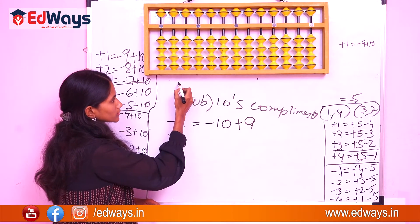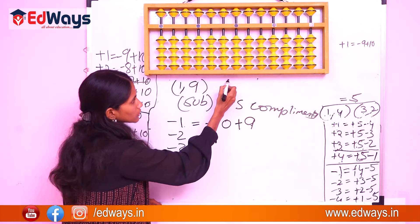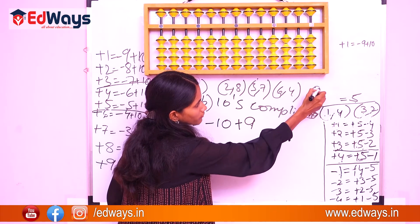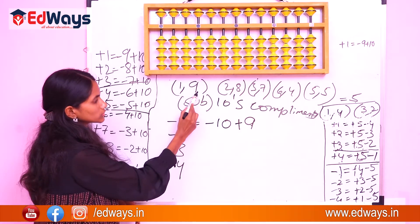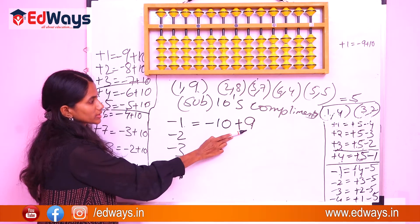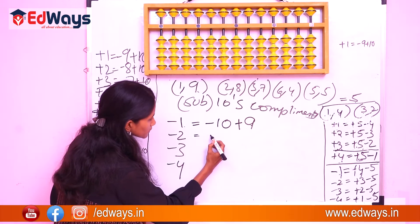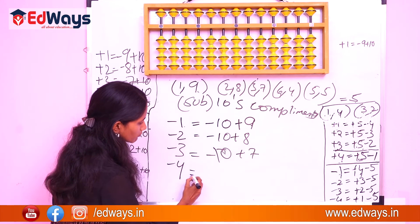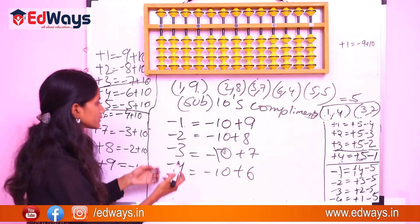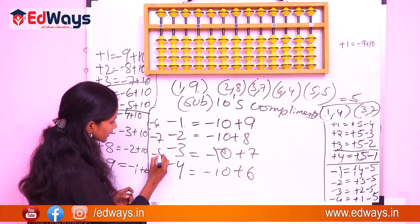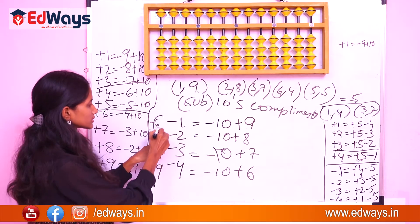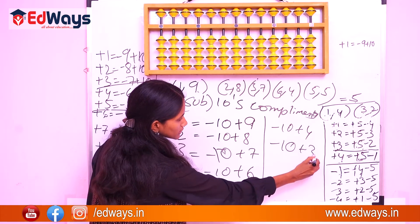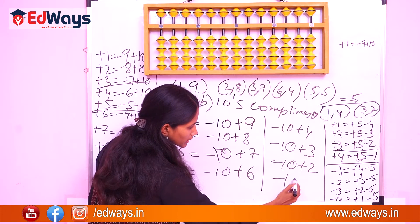I will write the complements here for easy reference: 1↔9, 2↔8, 3↔7, 4↔6, 5↔5. So 1's complement is 9, meaning minus 1 equals minus 10 plus 9. In a similar way: minus 2 is minus 10 plus 8, minus 3 is minus 10 plus 7, minus 4 is minus 10 plus 6, minus 6 is minus 10 plus 4, minus 7 is minus 10 plus 3, minus 8 is minus 10 plus 2, and minus 9 is minus 10 plus 1.